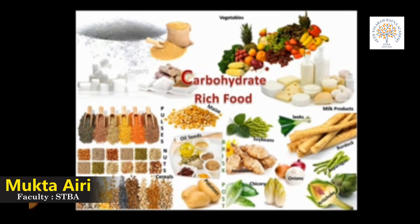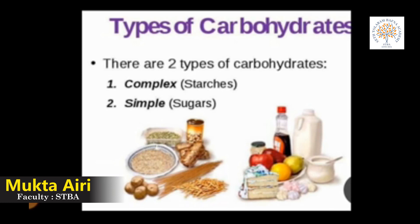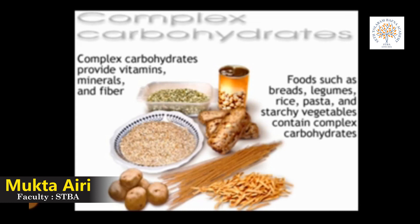Now let us see the first group, that is carbohydrates. Carbohydrates give energy to our body. Food items like milk and its products, potato, bread, idli and sugar contain carbohydrates. Food items rich in carbohydrates are known as energy giving food. People who do a lot of physical work like laborers and farmers should consume food rich in carbohydrates. Carbohydrates are of two types: complex carbohydrates and simple carbohydrates. Complex carbohydrates are called starch and take much longer time to break into simple form. They are digested more slowly than simple carbohydrates and provide vitamins, minerals and fiber.